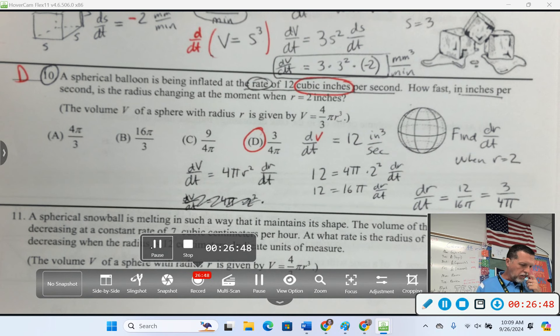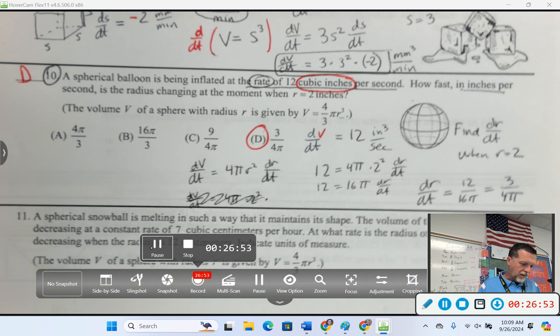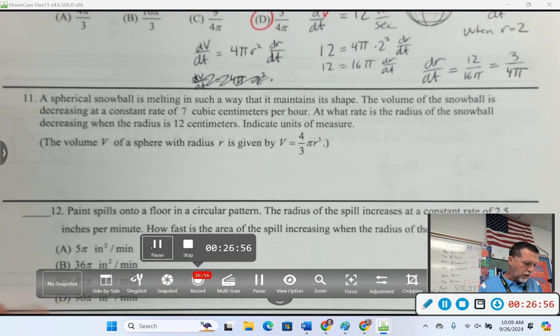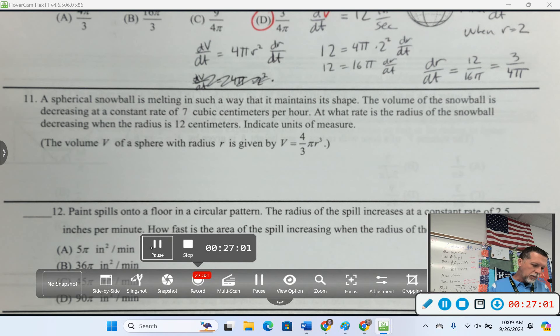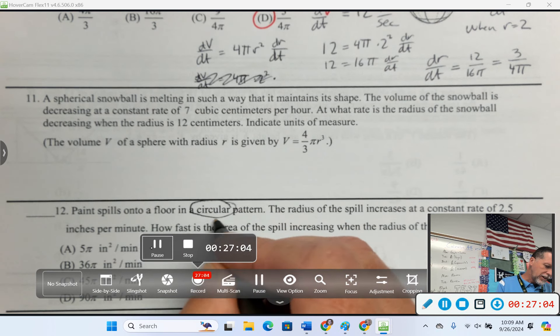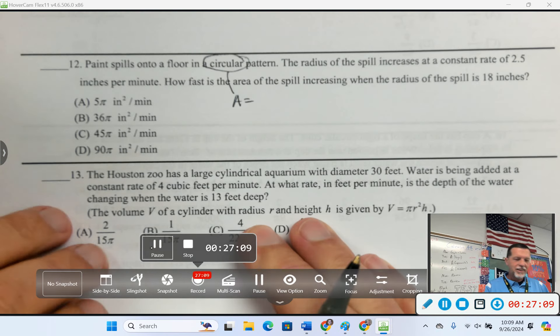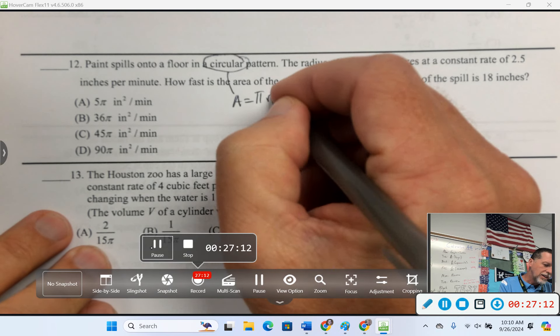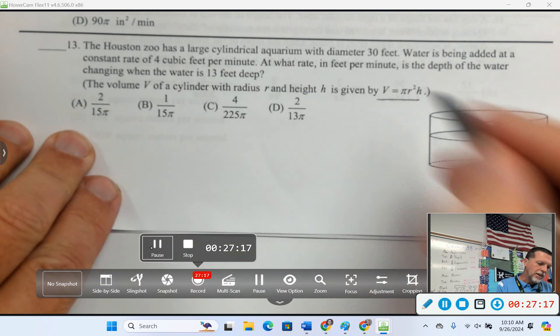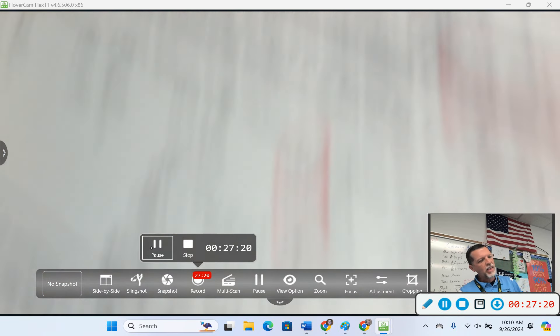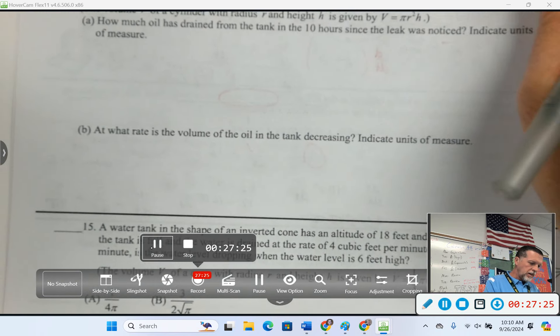Now that one was on the easier side of things. I hope you thought that one was on the easier side. Let's see, 11 is pretty similar, except it's still a sphere. It's melting instead of growing. So that's probably going to be negative somewhere. Number 12, paint spills on the floor in a circular pattern. What formula do you think we'll need for number 12? πr². Let's do number 14.